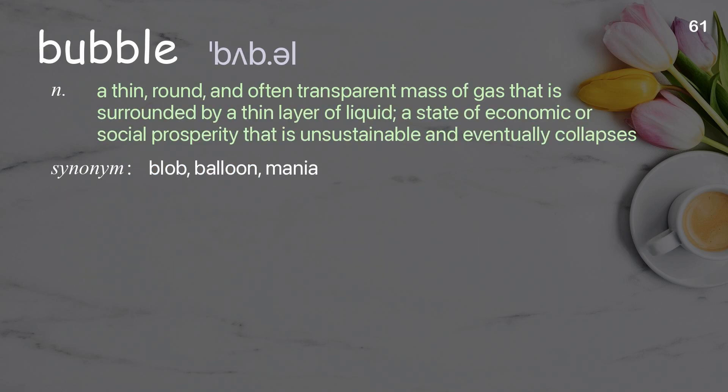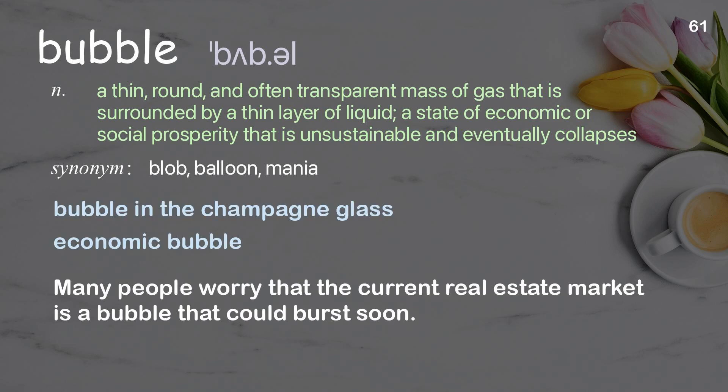Bubble: a thin, round, and often transparent mass of gas surrounded by a thin layer of liquid; a state of economic or social prosperity that is unsustainable and eventually collapses. Examples: bubble in the champagne glass, economic bubble. Many people worry that the current real estate market is a bubble that could burst soon.